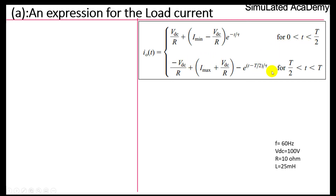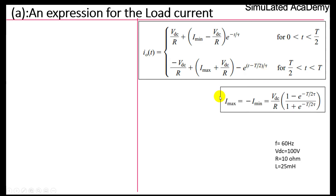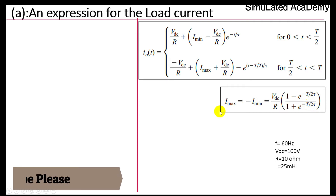Similarly, for the interval T/2 to T, the expression is: i(t) = −VDC/R + (I_max + VDC/R) · e^(−(t − T/2)/τ). The maximum and minimum currents can be found using the formula: I_max = −I_min = (VDC/R) · (1 − e^(−T/2τ)) / (1 + e^(−T/2τ)).